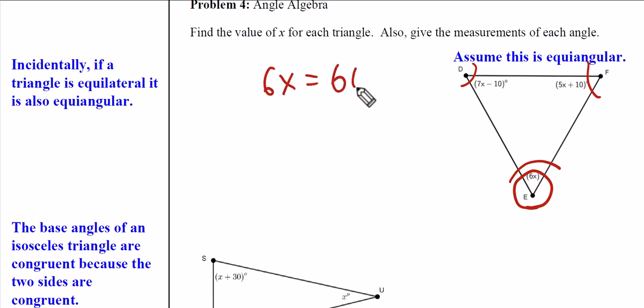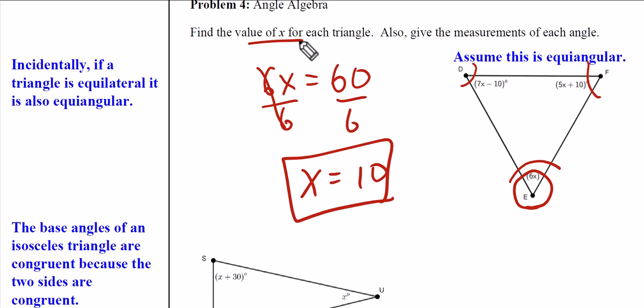Set it equal to 60 degrees and then solve for X, and I get X equals 10. And of course that's 60, this should also be 60 degrees, and so should this one. Now of course, if you want to verify this, you could plug the 10 in here: 7 times 10 is 70 minus 10 is 60. What if I plug the 10 in here instead? 5 times 10 is 50 plus 10 is 60. So we proved it.